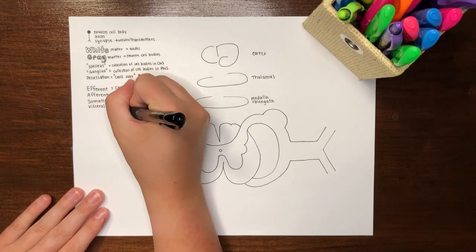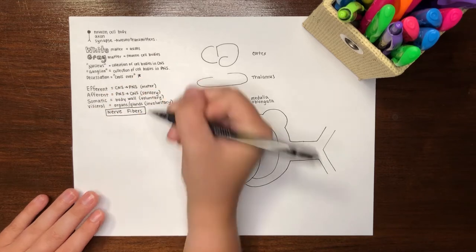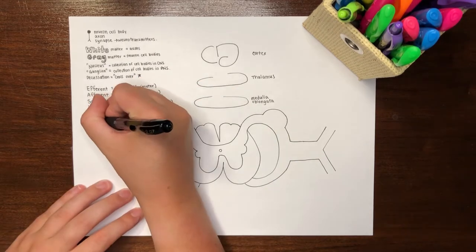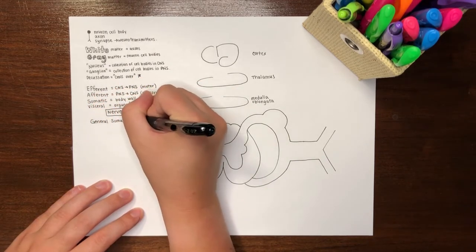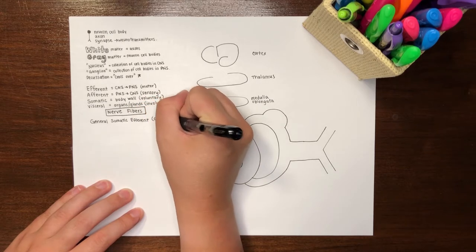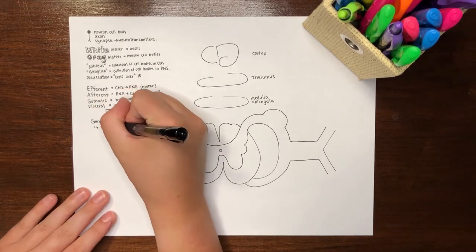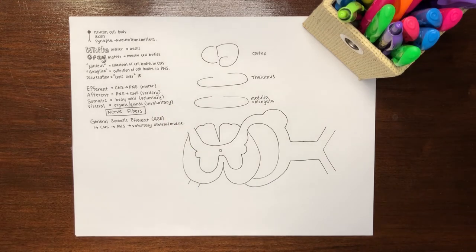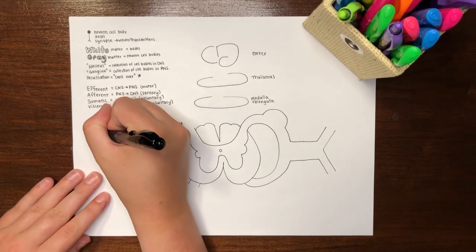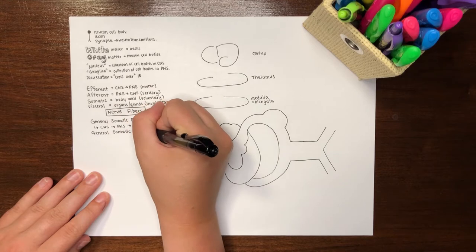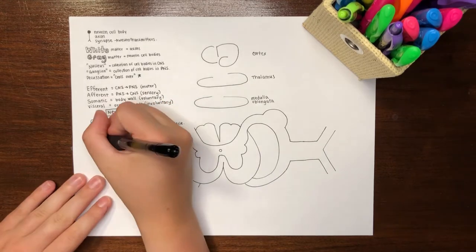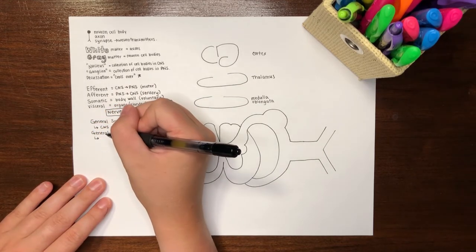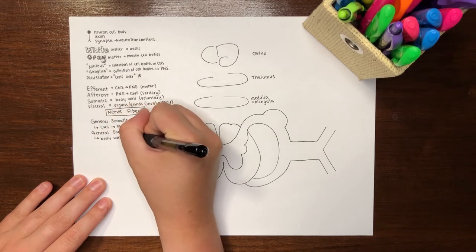Now that we know these basic definitions, we can put them together to define and describe nerve fiber types. General somatic efferent, abbreviated GSE, contain fibers that travel from the central nervous system to the peripheral nervous system and provide motor innervation to voluntary skeletal muscle. General somatic afferent fibers, abbreviated GSA, on the other hand, contain neurons that travel from the peripheral nervous system to the central nervous system, carrying sensory information from the body wall to the brain.